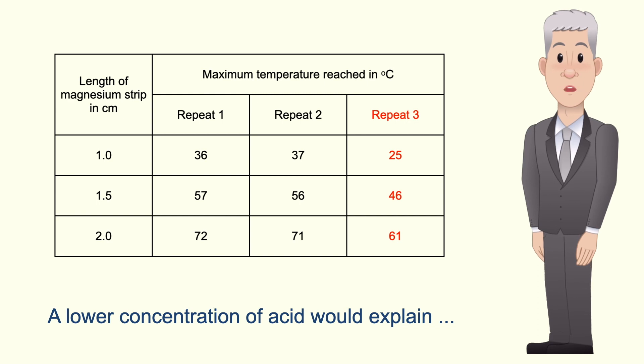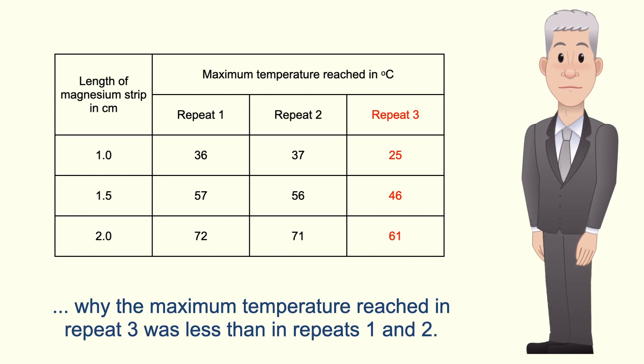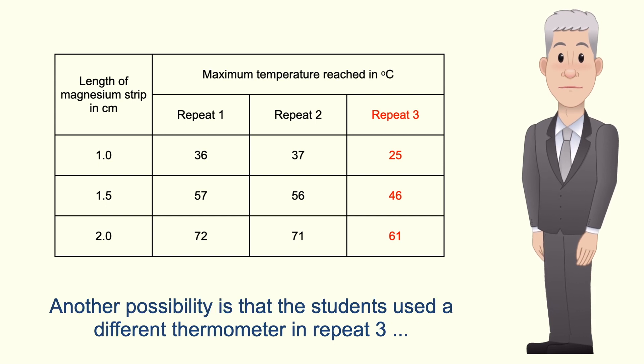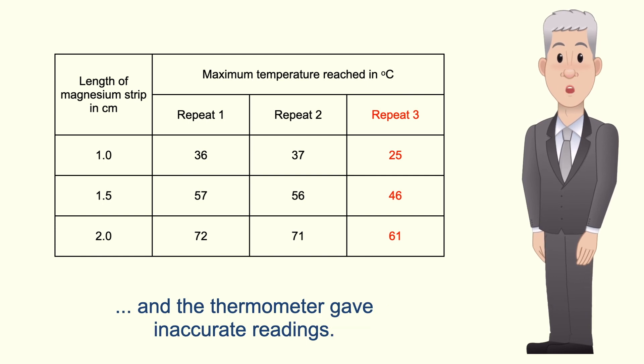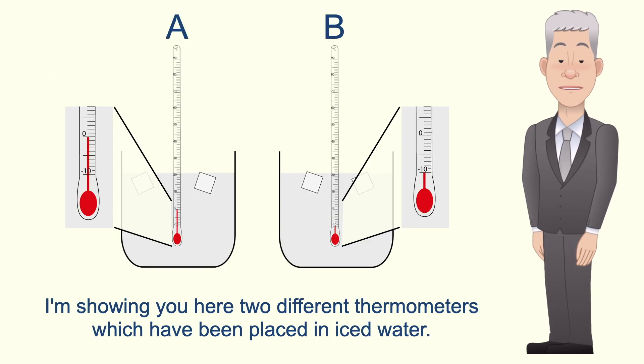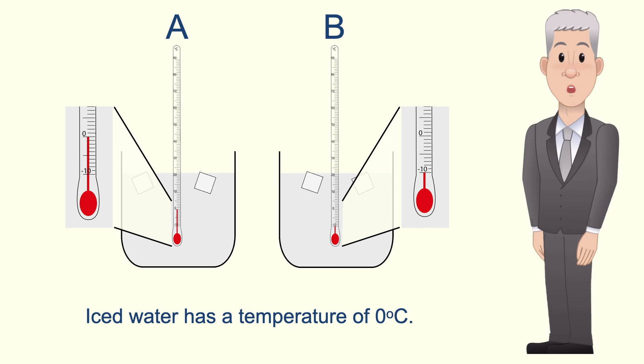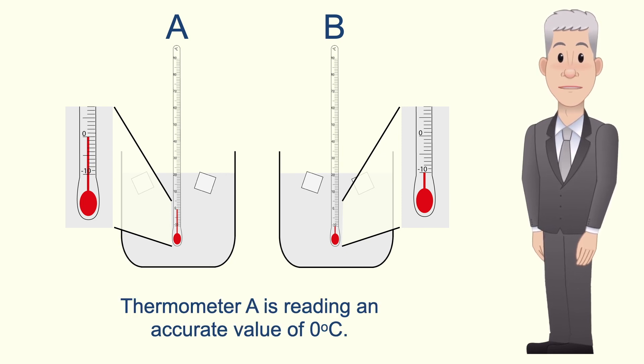Another possibility is that the students used a different thermometer in repeat 3 and the thermometer gave inaccurate readings. I'm showing you here two different thermometers which have been placed in iced water. Iced water has a temperature of 0 degrees celsius. Thermometer A is reading an accurate value of 0 degrees celsius.